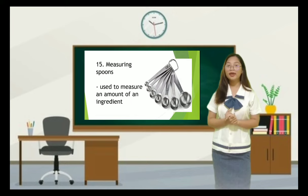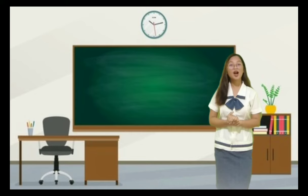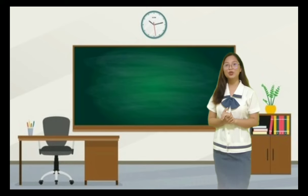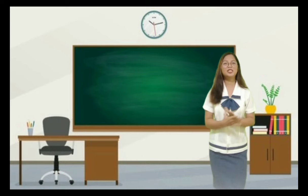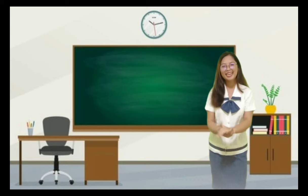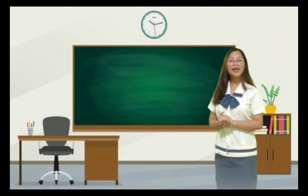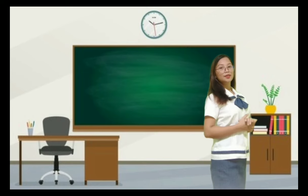Those are the different kitchen utensils. Class, do you have any questions regarding our discussion? Since you all understood our discussion, can you give me the definition of kitchen utensils? Angelica — precisely, it is a small handheld tool used for food preparation. Can anyone name at least five kitchen utensils found in the kitchen? All of your answers are correct! Are kitchen utensils important, class? Yes — kitchen utensils make our work in the kitchen faster and easier.